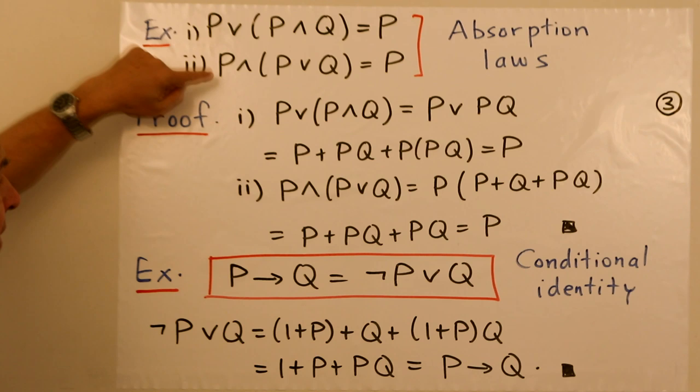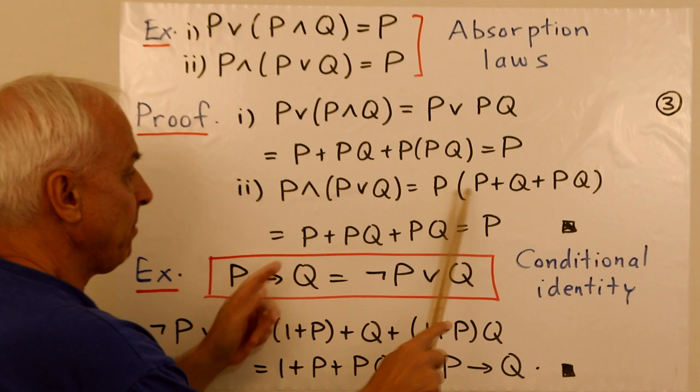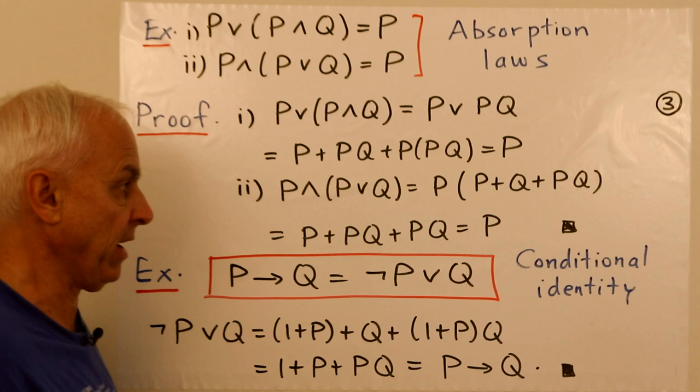For the second absorption law, p∧(p∨q): the and is the product, and the or is p plus q plus pq. Expanding, we get p squared plus pq plus p times pq, which is another pq. Since p squared equals p, the pq terms cancel and we just get p.